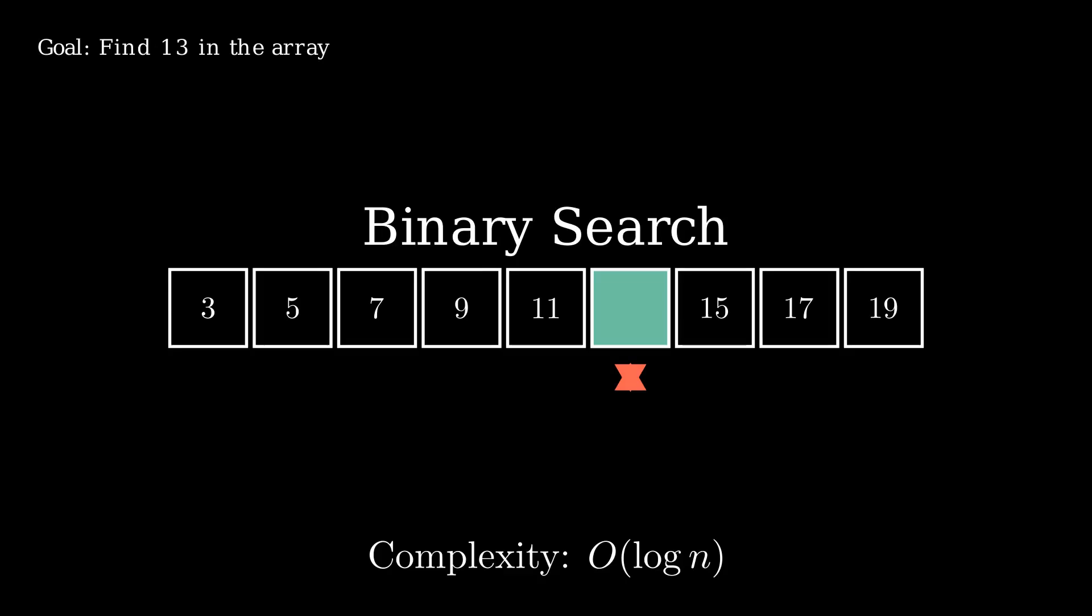Notice that it doesn't actually matter what base of log we use for Big O notation, as to change the base of a log function, we simply multiply it by a constant, and as we asserted before, O(a·f(n)) is simply O(f(n)).